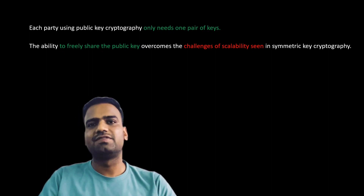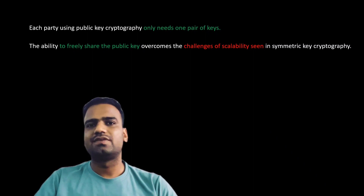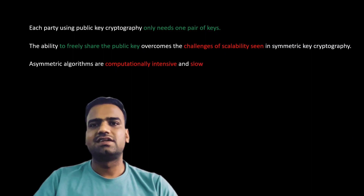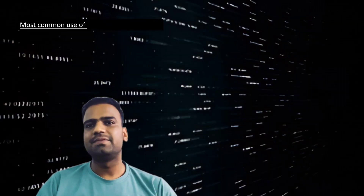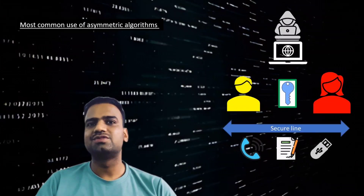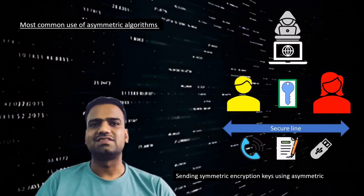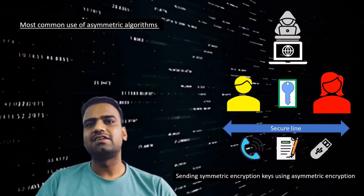A limitation of asymmetric encryption is that it is computationally intense and slow compared to symmetric algorithms, so it is typically used only to encrypt short messages. The most common use of asymmetric algorithms is to securely distribute symmetric keys, which participants then use for fast and secure communication. In symmetric encryption, the challenge was exchanging keys securely over an insecure network where keys were vulnerable to interception — asymmetric encryption solves this key distribution problem.